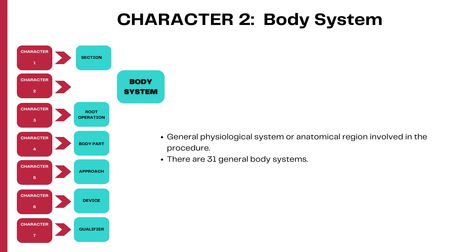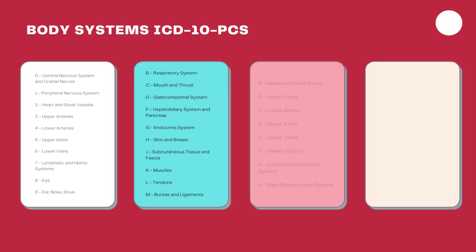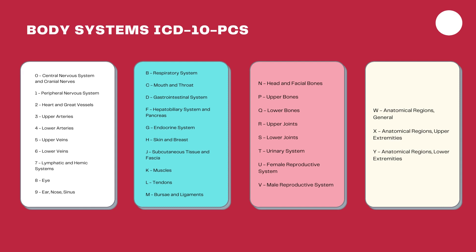The second character is the body system. There are a total of 31 general body system values available in the PCS system. Some body systems are unique to the PCS coding system — you cannot find them in CPT or any other organization. These are the 31 body system values available in PCS.